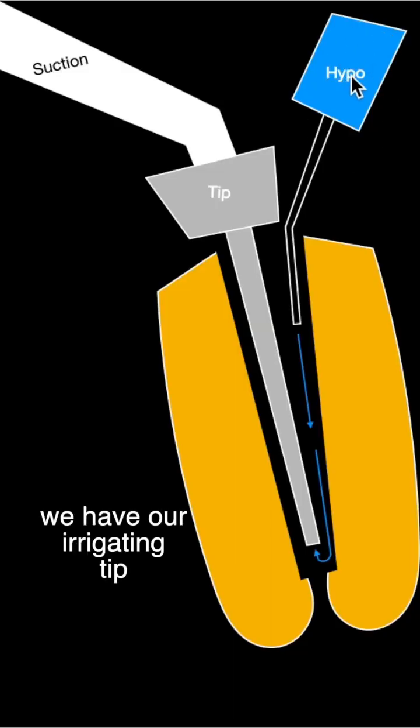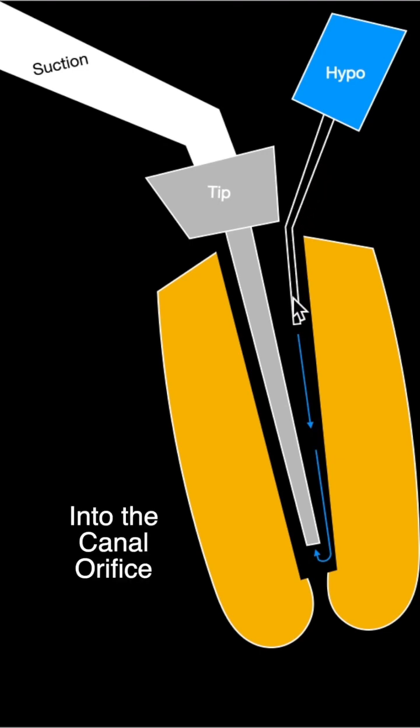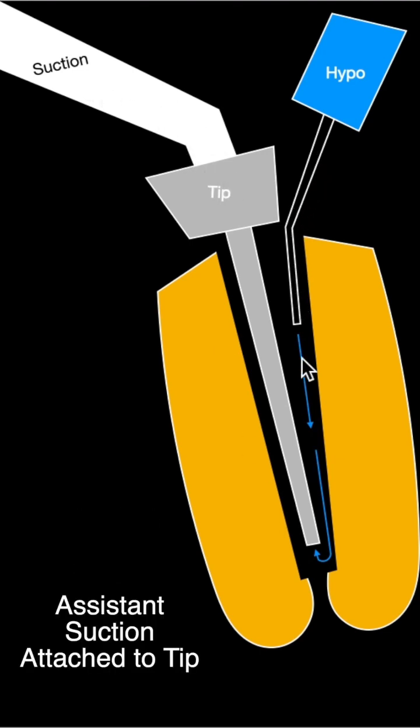We have our irrigating syringe with hypo or EDTA or whatnot. We're irrigating gently into the top of the orifice, and we have our suction attached to a tip.